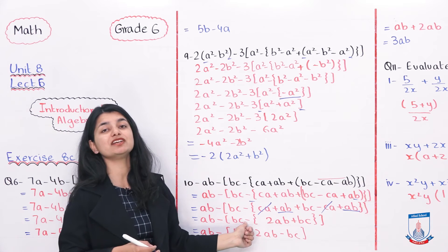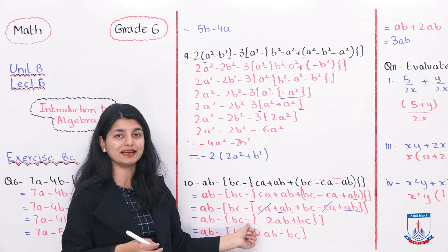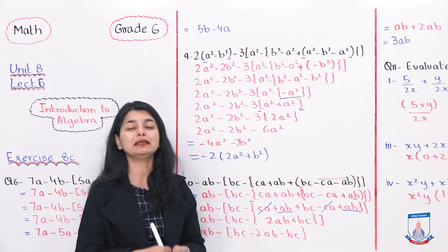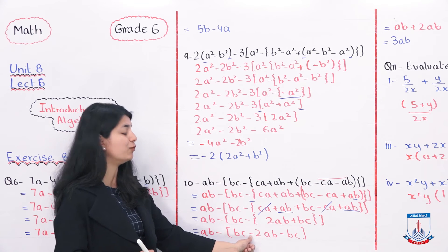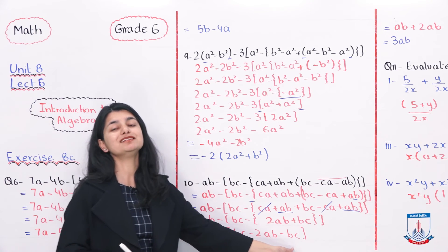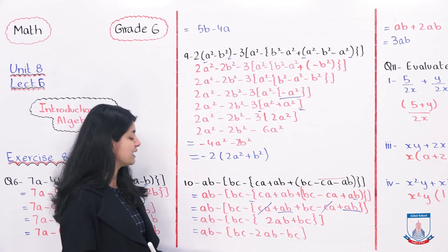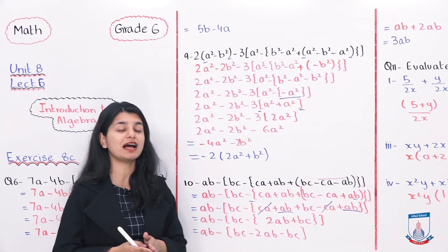Isko likhna hai, aapne is tarah se, aur ab aapne isko, jo seke baahir wala sign hai, minus ka, usse multiply karna hai. Minus ki sign se multiply karna hai, se saare signs change ho jayenge. 2AB, jo se positive tha, wo ab minus 2AB bana chuka hai, plus BC, jo se positive tha, wo ab minus BC bana chuka hai. Isse tarah se, hamare paas, sab phir se, hamare sir-phir se bracket reha gaya, uske andar hi terms aagay hai.